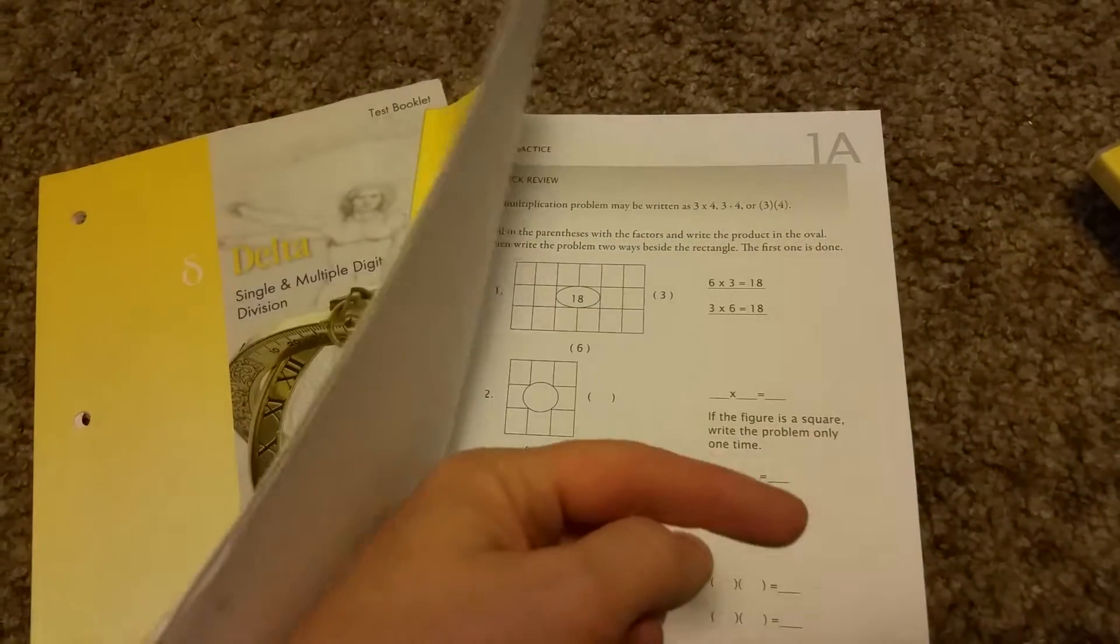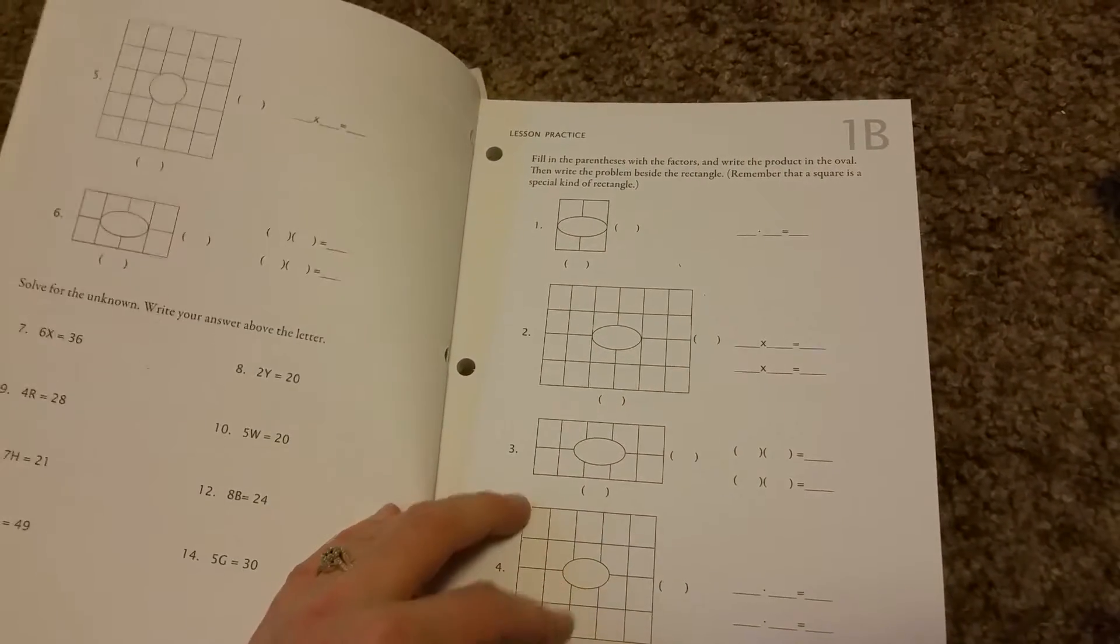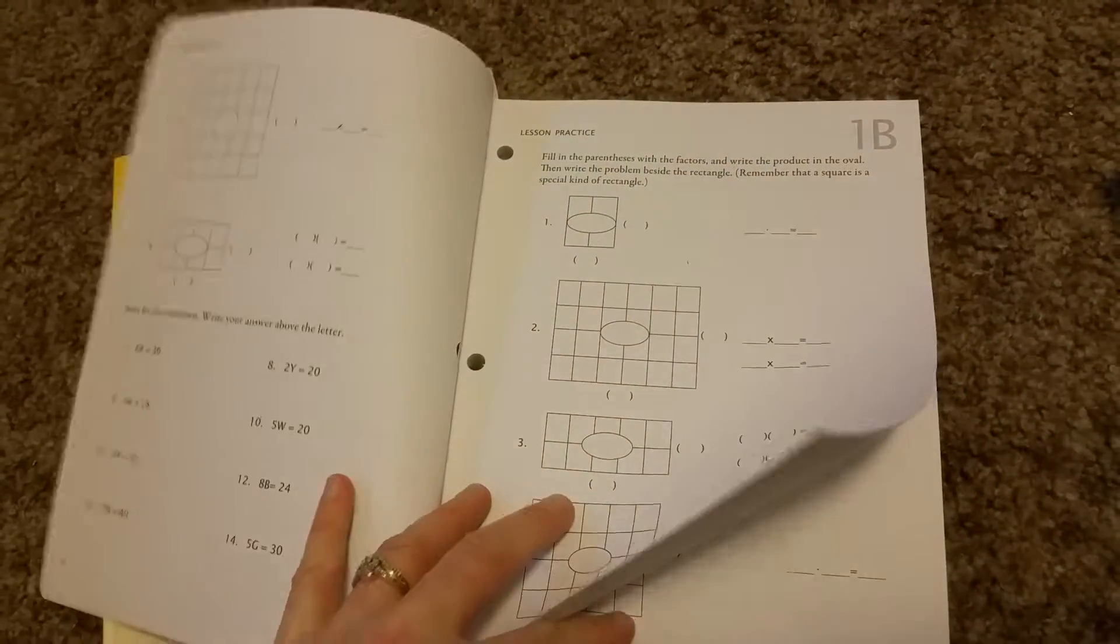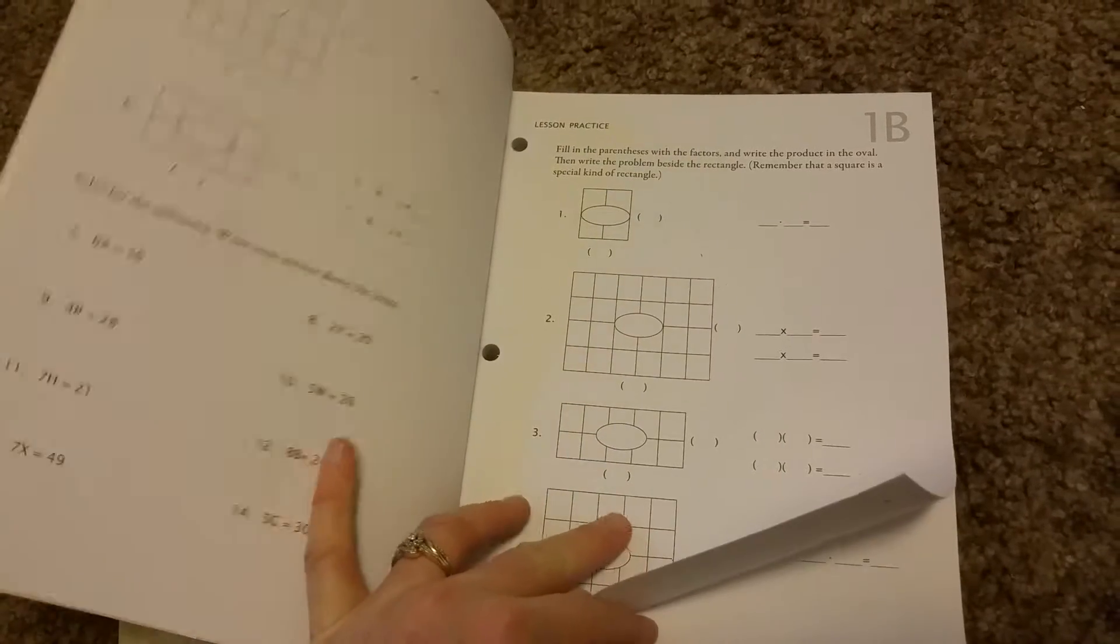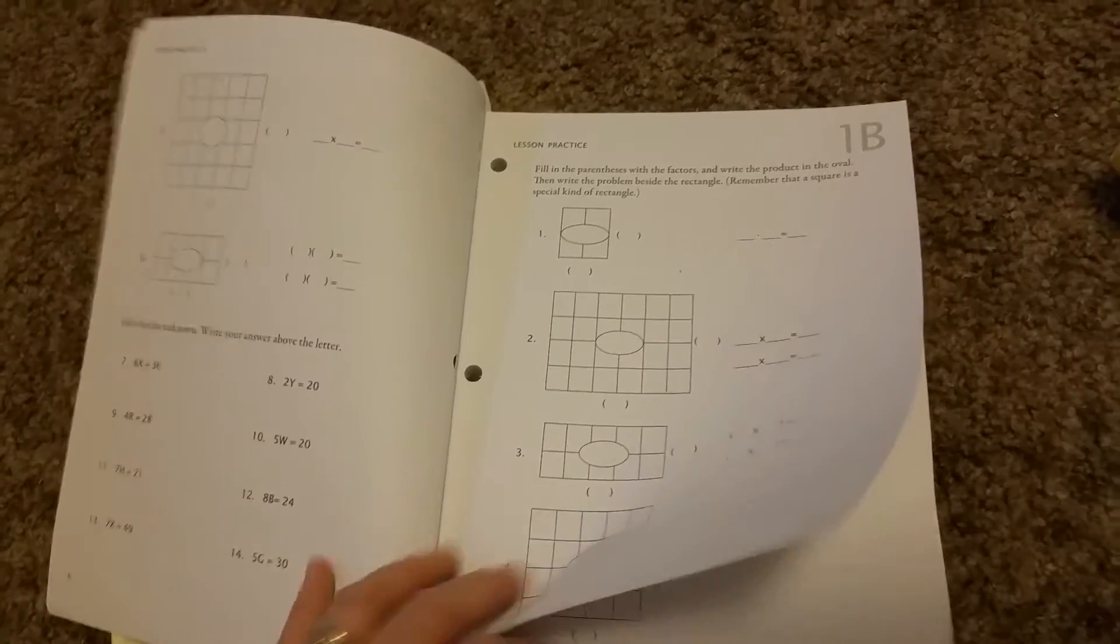We watch our DVD and then we do our worksheet to go with it. So A, B, and C are all beginning learning the lesson. Now you don't need all three worksheets. Don't worry your kid out. If he loves it and flies through it and gets them all right on A, then you don't even need to do B if you don't want to.